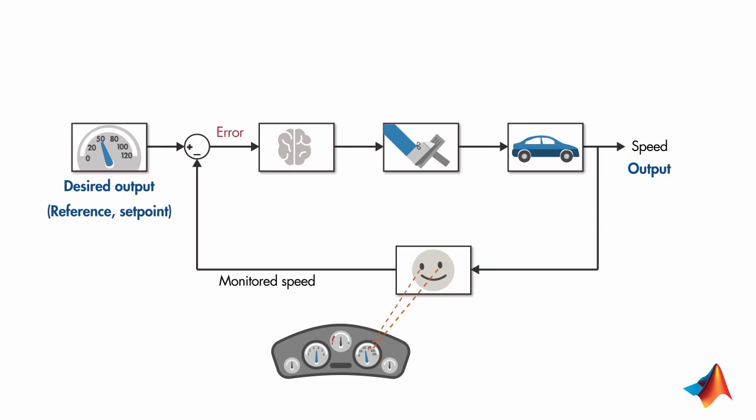The object whose output you try to control is called the plant. The output of the plant is measured by the component called the sensor. And the measured output is then compared to the desired output.